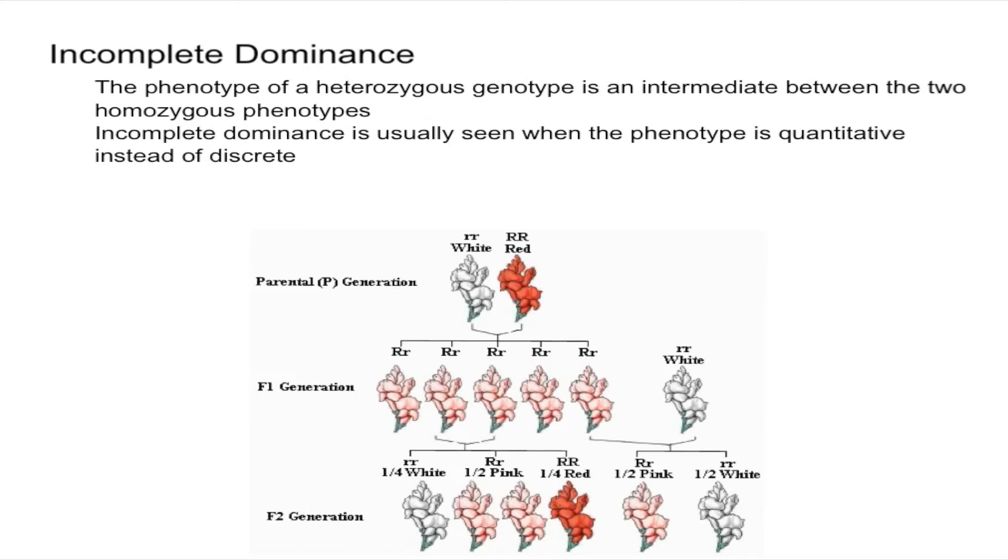And finally incomplete dominance is usually seen when the phenotype is quantitative instead of discrete.